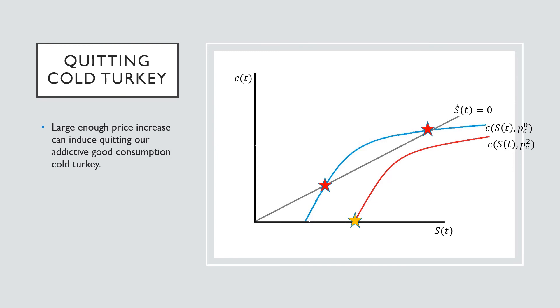Now if we have a large enough price effect, we can push this curve out further rightward and end up in a situation where we can induce quitting the addictive good cold turkey. That is going to give us a steady state of this yellow star that we have right here, with zero consumption of our addictive good.